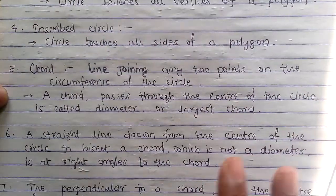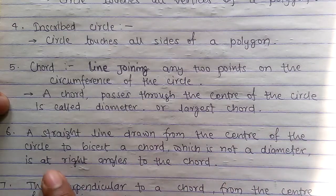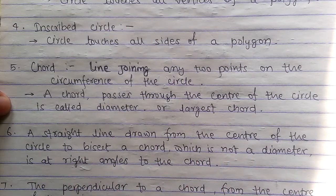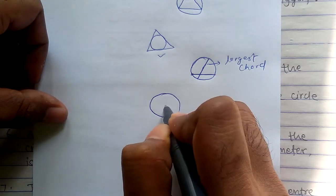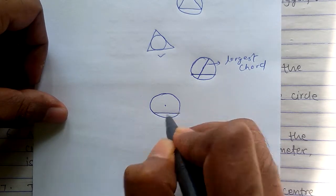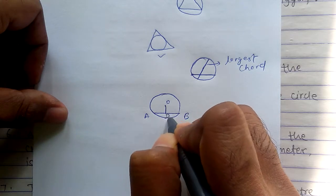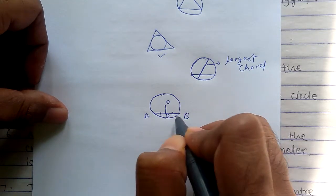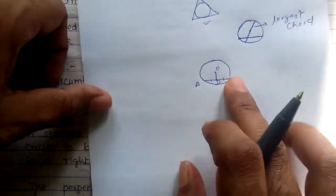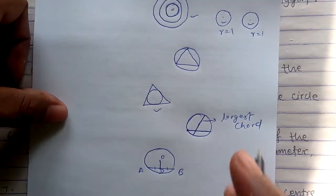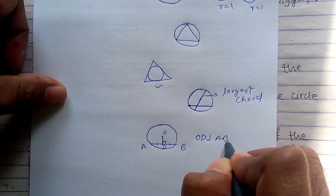Point number six: A straight line drawn from the center of a circle to bisect a chord which is not a diameter is at right angle to the chord. This is a circle, this is center, and you have a chord AB. From center, a line passes to bisect AB. O is the center and D is the point. This is perpendicular, so OD is perpendicular to AB.